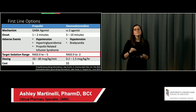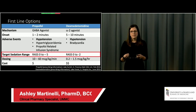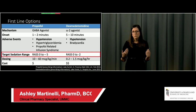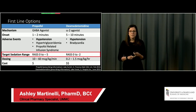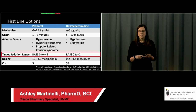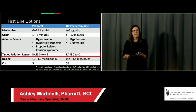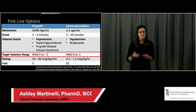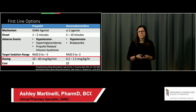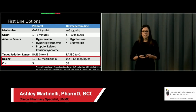A key distinction: dexmedetomidine can only achieve a target RASS of 0 to -2. Propofol gives a wider range — from lightly sedated to -5 — making it preferable when you need aggressive procedures, aggressive vent maneuvers, or paralysis. If you need to reach deep sedation, dexmedetomidine simply cannot get you there based on its alpha-2 agonist mechanism. Dosing is listed for reference; dexmedetomidine costs have come down but remain slightly higher than propofol.